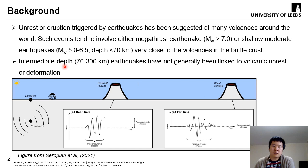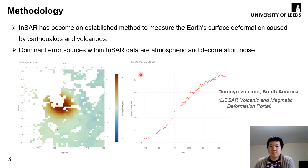Among all these observations, however, intermediate depth earthquakes — whose depths range from 70 to 300 km — have not been generally linked to volcanic unrest or deformation, and that's what we are going to talk about in today's study.